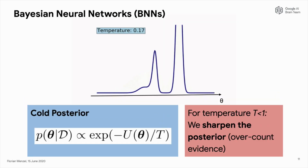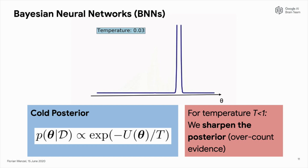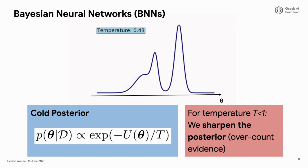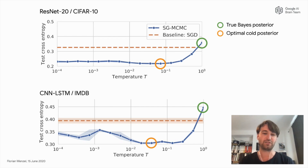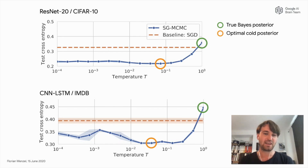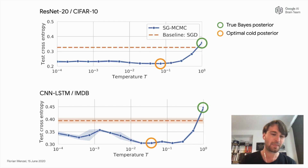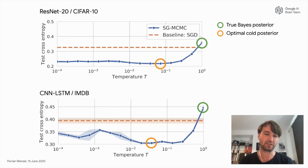Let's see how this looks in practice. When we decrease the temperature, the probability mass becomes more concentrated at the modes. In the top plot, we consider a ResNet-20 architecture on CIFAR-10. We train BNNs for different temperatures and plot the final test performance as a function of temperature. You can see that the true Bayes posterior at temperature one performs worse than the SGD baseline, but we can improve performance by decreasing the temperature. The same holds for an LSTM on the IMDB dataset — at temperature one we are again worse than the baseline, but we can improve by decreasing the temperature. In both settings, the optimal temperature is clearly less than one.